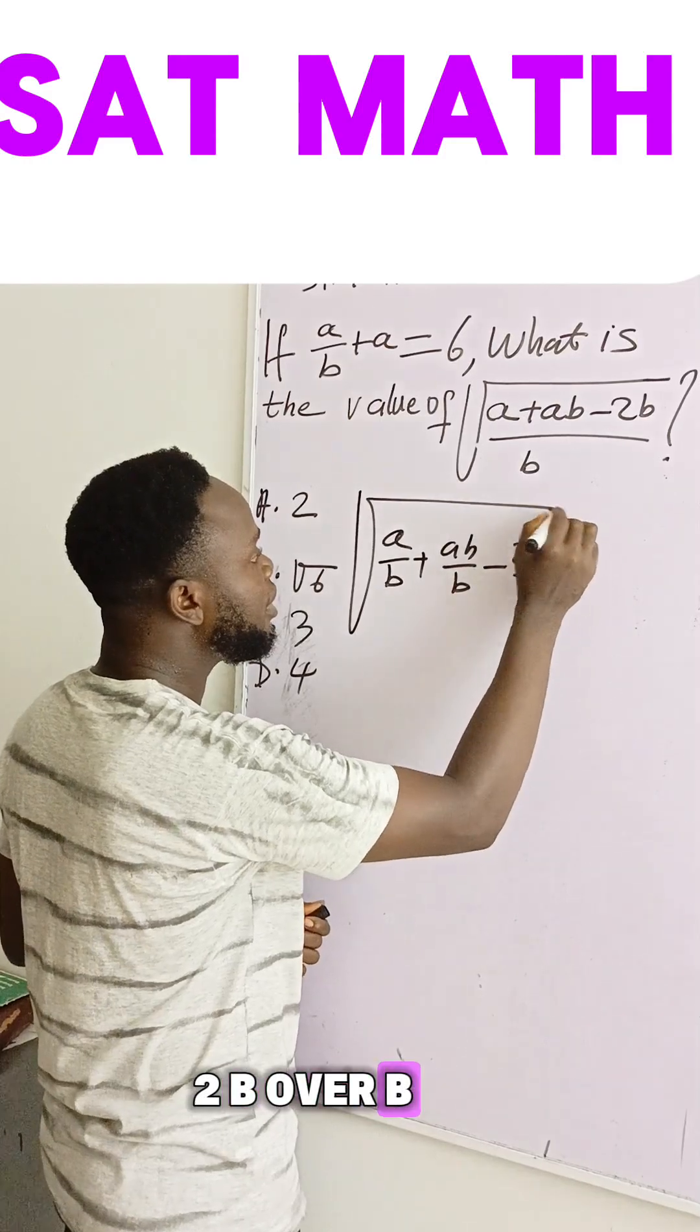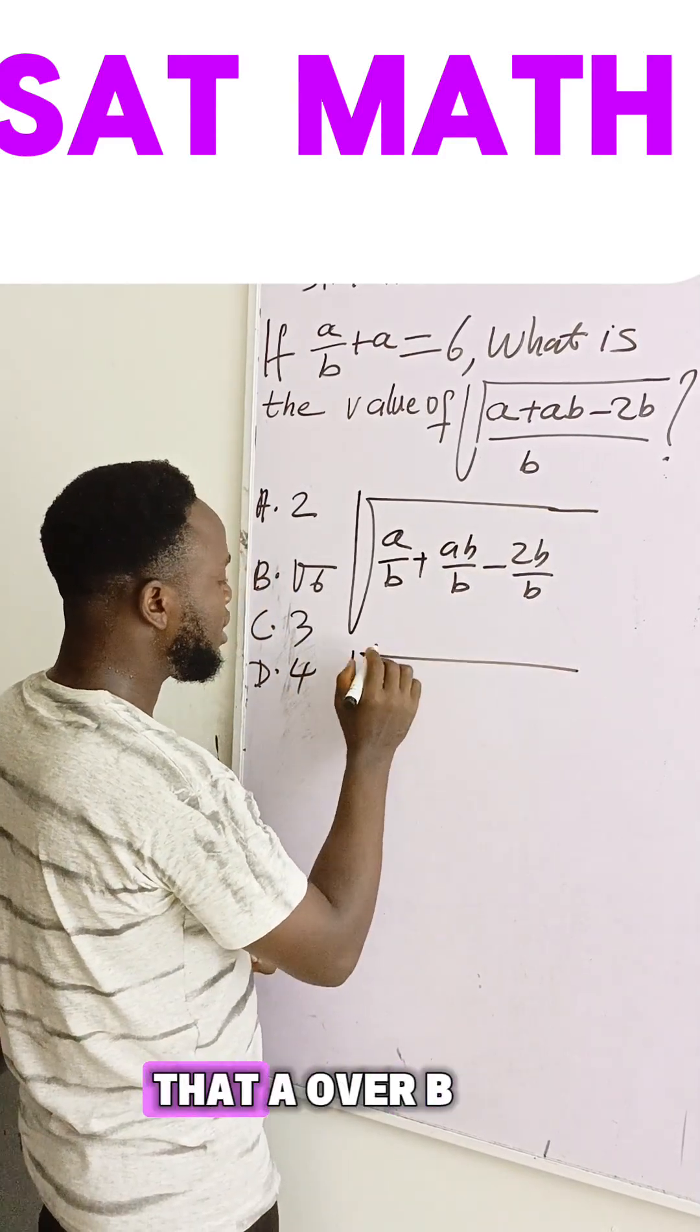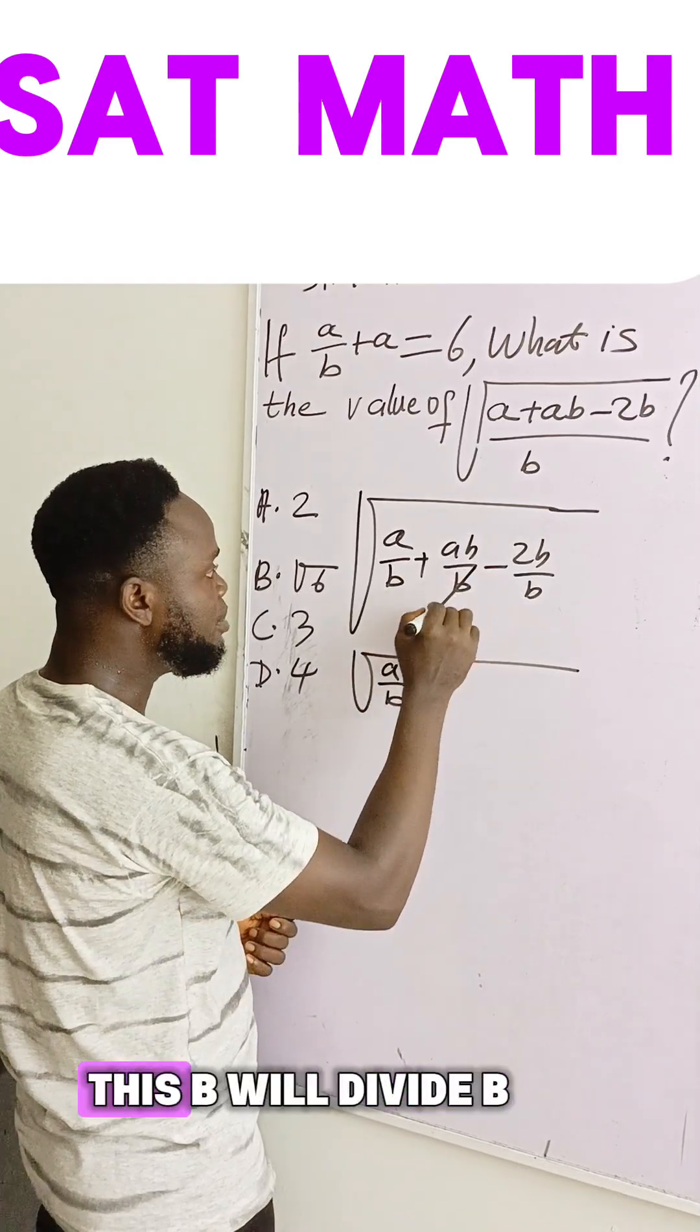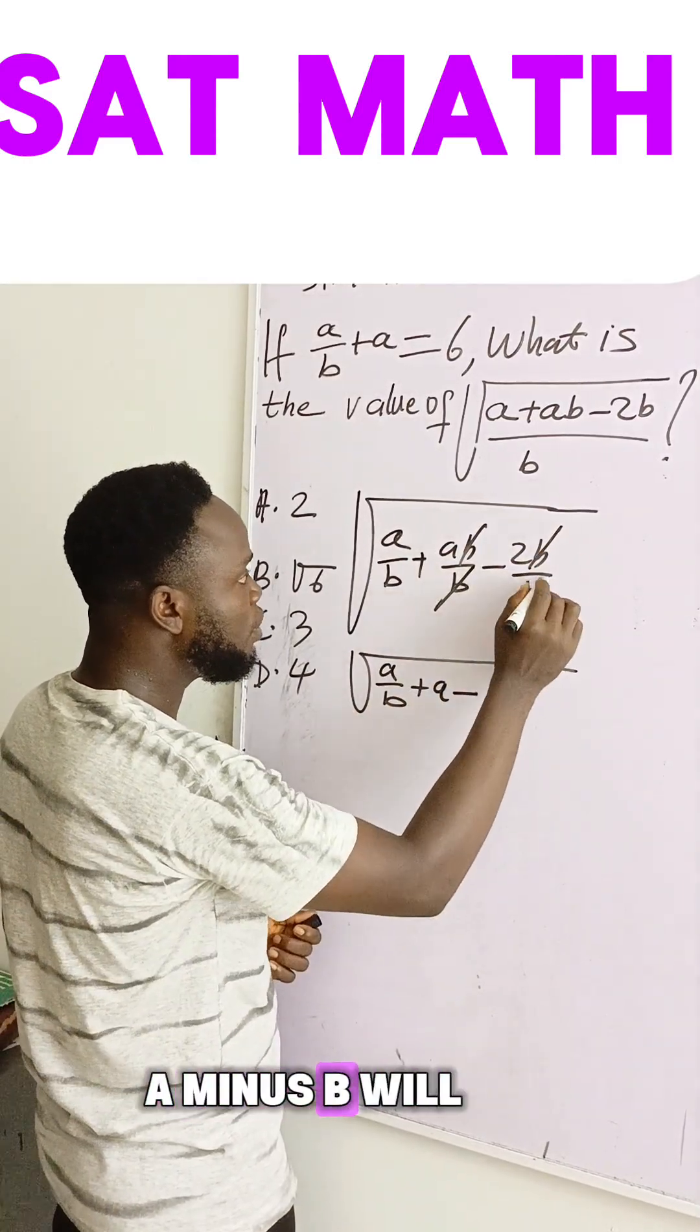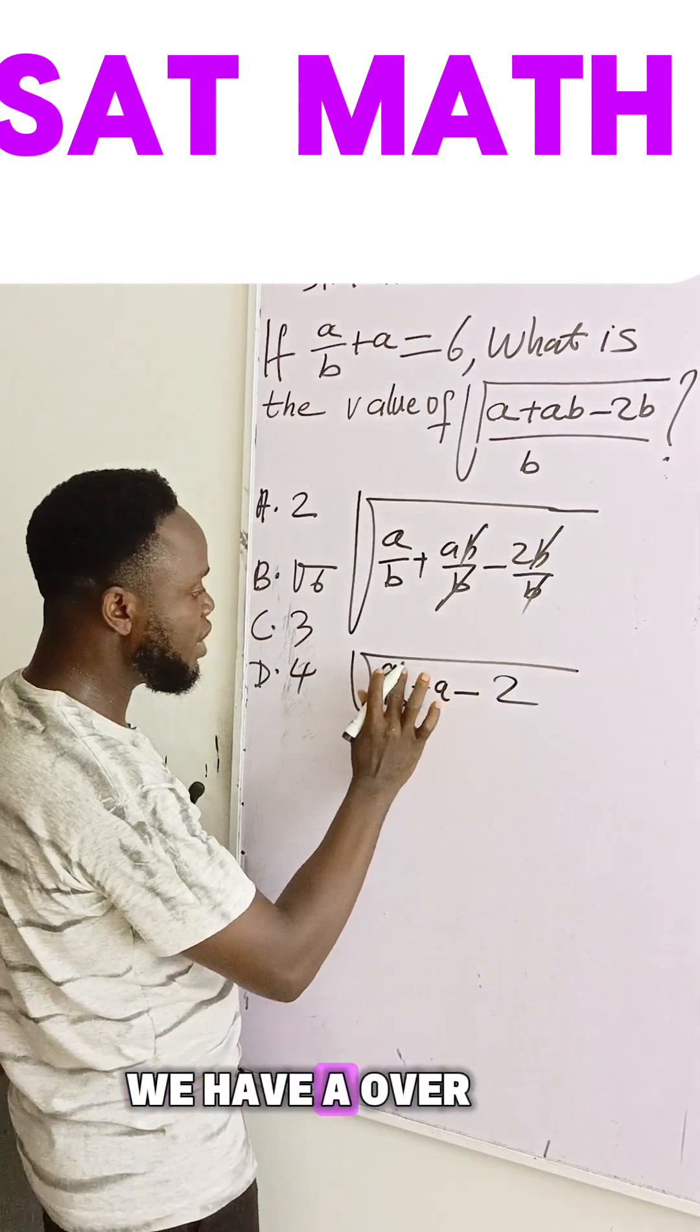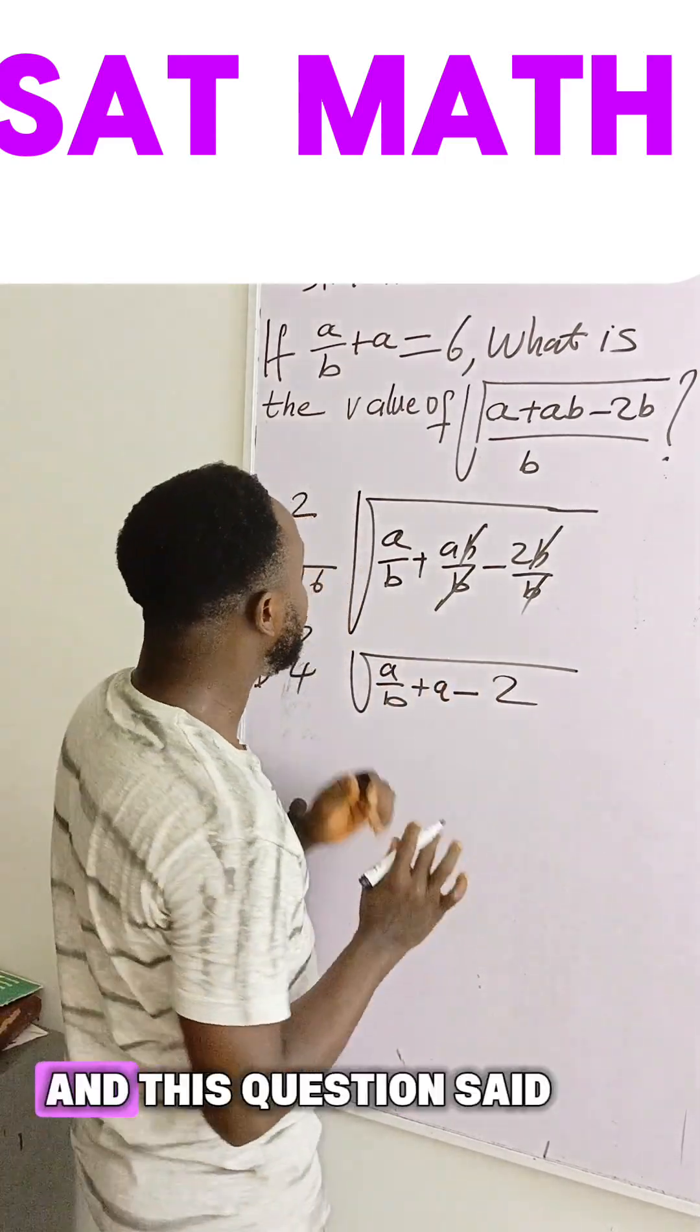Then if I do this, I'll have a over b. This b will divide b, what remains here is a, minus b will divide b here. So we have a over b plus a minus two.